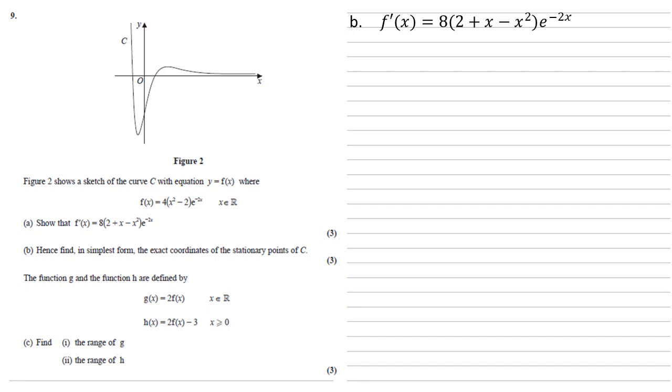At a stationary point, the gradient is 0, so setting this equal to 0, we can see that e to the minus 2x can't be equal to 0, so for this all to be equal to 0, it must be the brackets that are equal to 0, so 0 equals 2 plus x minus x squared.